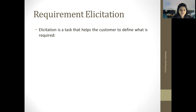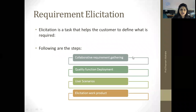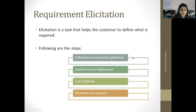Requirement elicitation is basically a task that helps the customer to define what is required. This task is helpful for the customer, and with this task, the customer can define exactly what he wants. For specifying his needs, there are certain steps performed in requirement elicitation. These steps are: first, collaborative requirement gathering; second, quality function deployment; third, user scenarios; and fourth, elicitation work product. We'll see each one of them.